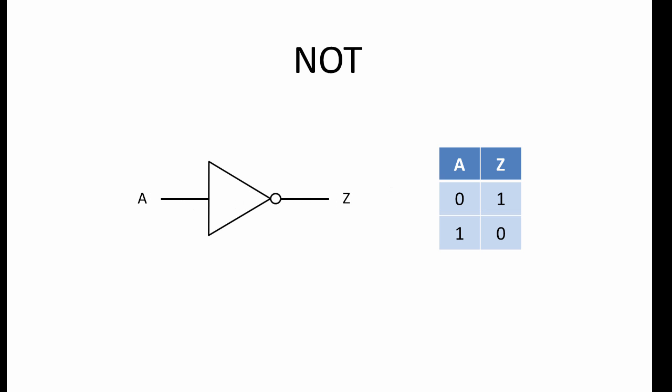Let's begin by reviewing the building blocks. This is a NOT gate. The input has been labelled A, and the output has been labelled Z. You can see in the truth table that when A is 0, Z is 1, and when A is 1, Z is 0.